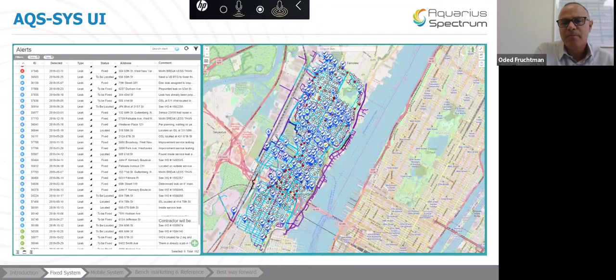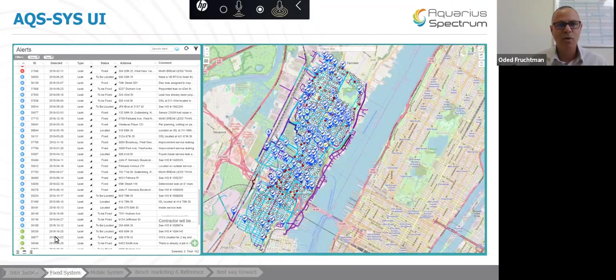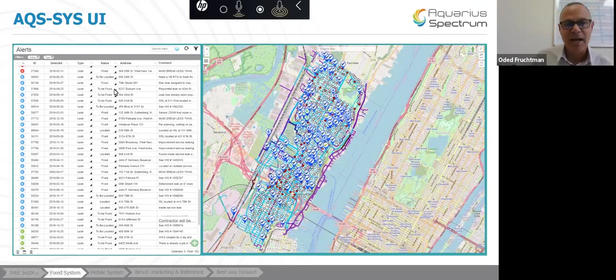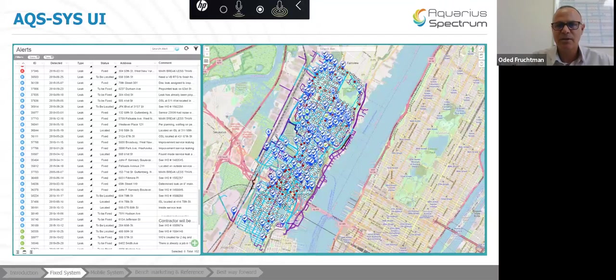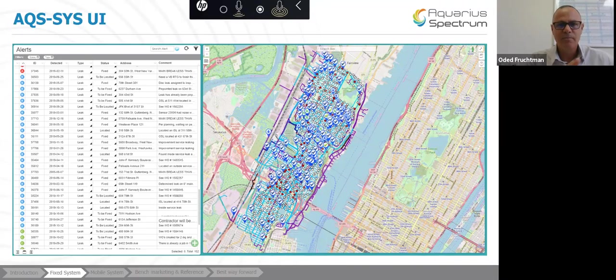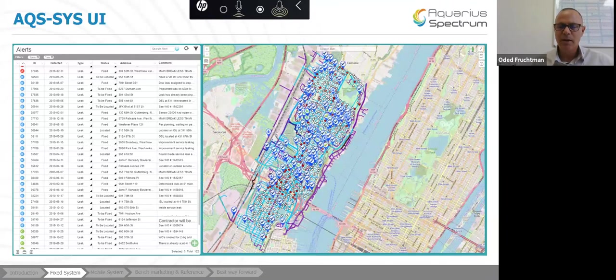It looks like this. On the left side, we categorize the leaks by ABC. A, it's a big size leak. B, it's a medium size. And C, it's a small one. Each leak has its own ID, the date it was detected, the status of it. Was it fixed? Was it identified? Should it be fixed? Suspected locations. Various statuses that we managed together with the customer itself. The address of the leak. And there's a lot of comments that the team can put along the way.